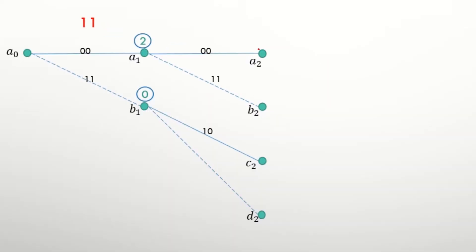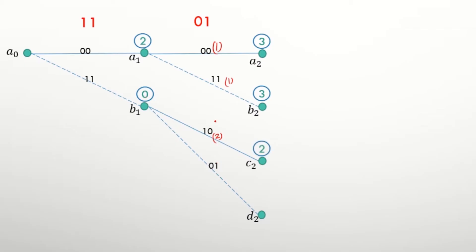Now we compare the second received pair, which is 01, with the four codes. Comparing 01 with 00: the Hamming distance is 1, added to the previous distance of 2 gives a metric of 3. Comparing 11 with 01: Hamming distance is 1, added to the previous 2 gives 3. Here the Hamming distance is 2, added to the previous gives 2. And comparing 01 with 01: Hamming distance is 0, added to the previous gives 0.